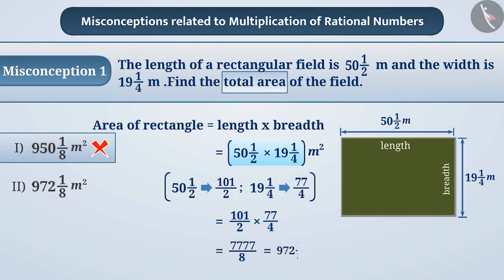We can express this as 972⅛. Therefore, the area of the rectangle is 972⅛ meter square, so option 2 is the correct answer.